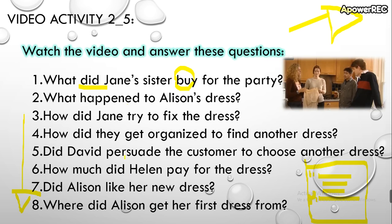Remember: when you use the auxiliary 'did' in a question, you need to use a base verb. But when you answer, you don't use an auxiliary — never use an auxiliary when you write a sentence in affirmative form in simple past. For example: 'What did James's sister buy for the party?' You say 'James's sister bought' — not 'did buy.' James's sister bought something.